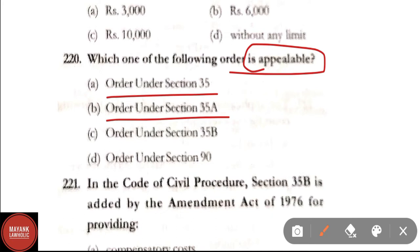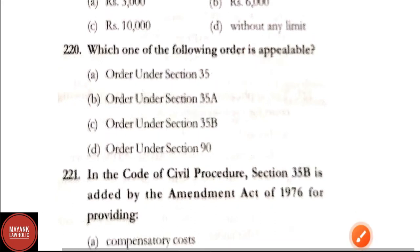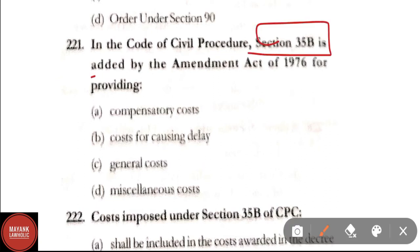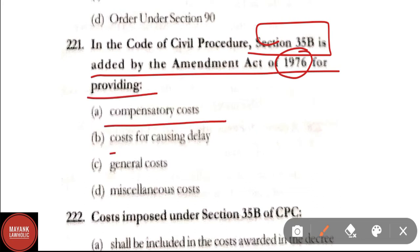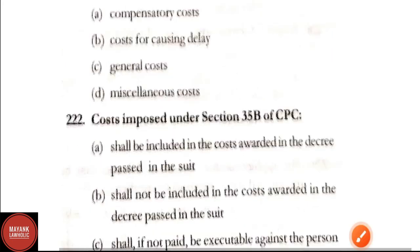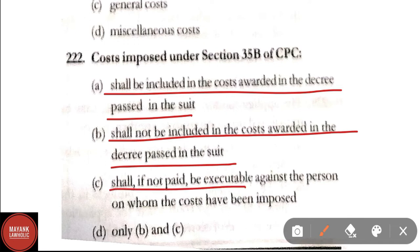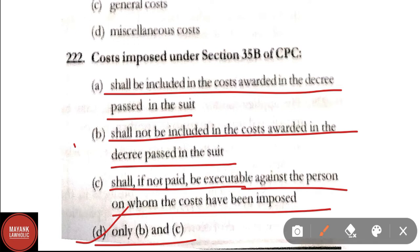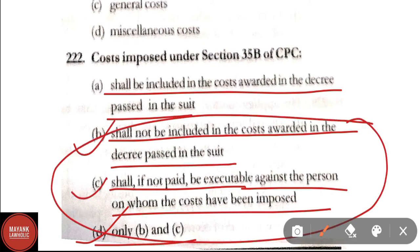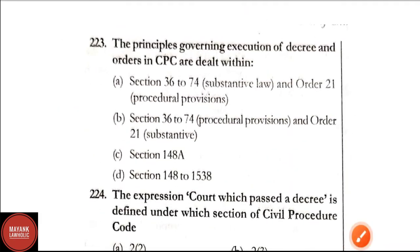Question 220: Which of the following orders is appealable — order under Section 35, Section 35A, Section 35B, or Section 90? Correct answer: Option B, order under Section 35A is appealable. Question 221: In CPC, Section 35B was added by the Amendment Act 1976 for the provision of — compensatory cost, cost for causing delay, general cost, or miscellaneous cost? Correct answer: Option B, cost for causing delay. Question 222: Cost imposed under Section 35B of CPC shall not be included in the cost awarded in the decree, and shall if not paid be executable against the person on whom the costs have been imposed. Correct answer: Option D, only B and C.